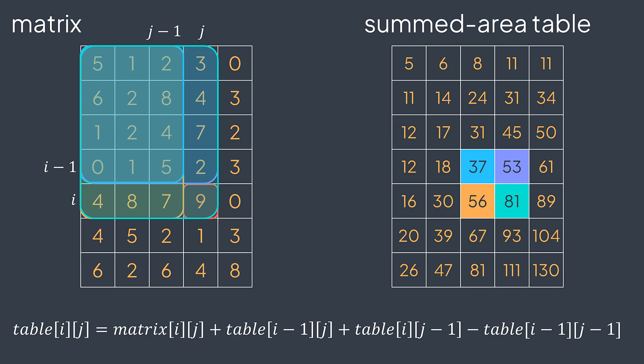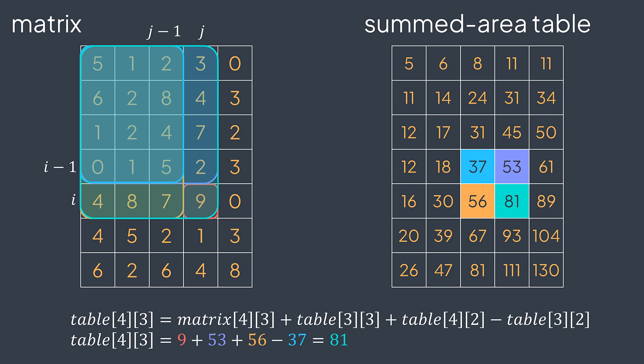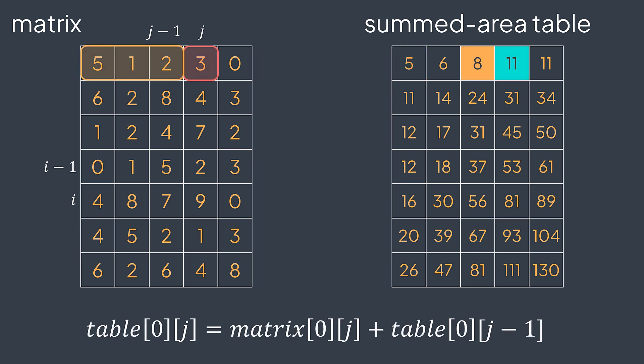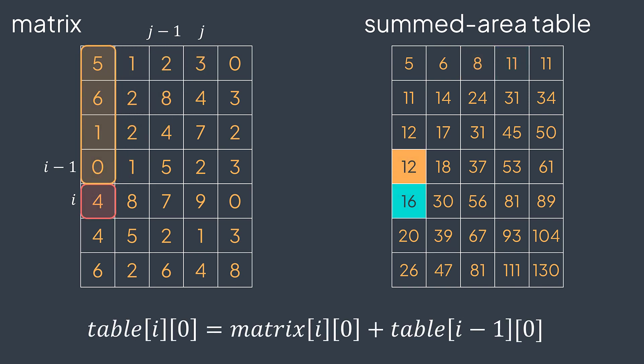For example, table[4][3] = matrix[4][3] (9) + table[3][3] (53) + table[4][2] (56) - table[3][2] (37) = 81. There are edge cases: in the first row, table[i-1][j] is out of the grid, and in the first column, table[i][j-1] is out of the grid. To handle them: in the top-left cell, put matrix[0][0]; in remaining first-row cells, put matrix[0][j] + table[0][j-1]; and in remaining first-column cells, put matrix[i][0] + table[i-1][0].